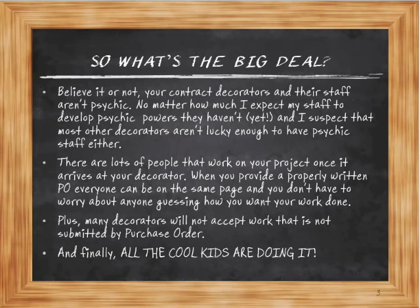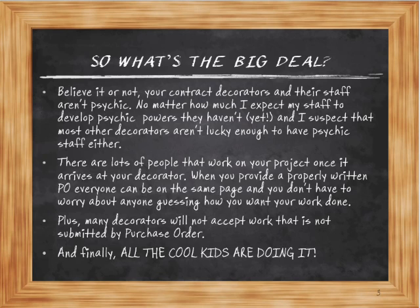What's the big deal about a purchase order? Well, believe it or not, your suppliers, contract decorators and their staff aren't psychic. No matter how much I expect my staff to be psychic — and I've been trying to make them psychic for years — it doesn't happen. Psychic staff just isn't a service I can offer. With all of the hands that are on your order from the day it shows up, whether it gets UPS'd in or whether you drop off boxes of shirts, there are so many different people involved that if there's not a purchase order, mistakes are bound to happen. If you provide a properly written PO, everybody's on the same page — it doesn't matter if you drop something off to a front counter staff who leaves at two o'clock and nobody looks at it again until three. With a purchase order, everybody knows what's going on and there's no surprises.